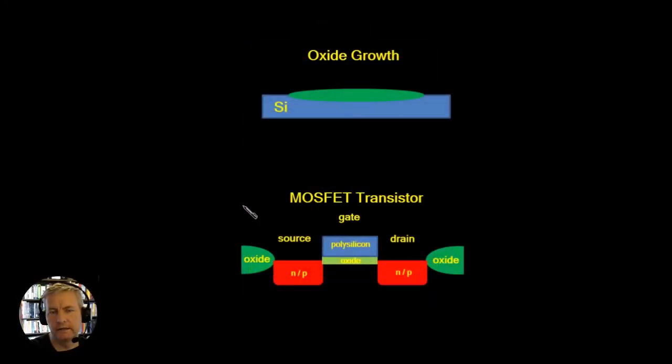The final category are changes that are made both above the silicon layer and within the silicon. Now an example of this is oxide growth and we use this to grow the oxide just below the gate of our MOSFET.